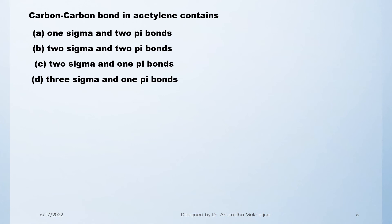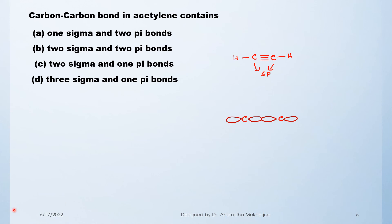The last question is: the carbon-carbon bond in acetylene contains — four options are given. First, we draw the acetylene molecule. Both carbons are sp hybridized. Two sp orbitals overlap to form a sigma bond.